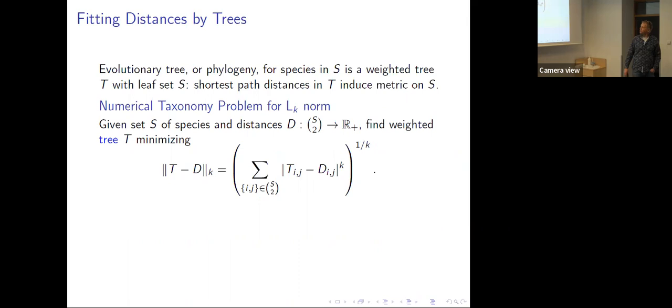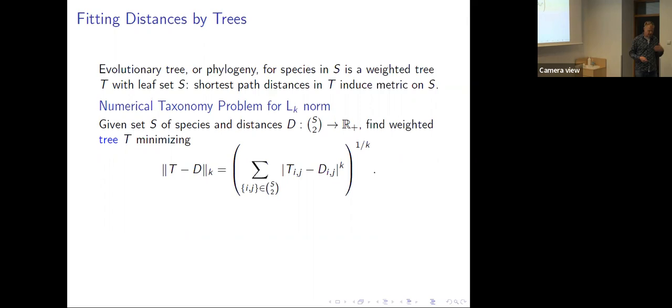The formalization of the problem: we know we have errors, so we should somehow weigh them. You can do it in any Lk norm — you look at the sum of errors to the kth power and take the kth root. If k is infinity, it's just the max norm; if k is one, it's the L1 norm, the sum of errors. That's what we're going to look at mostly in this talk. This is actually the most combinatorial version of the problem.